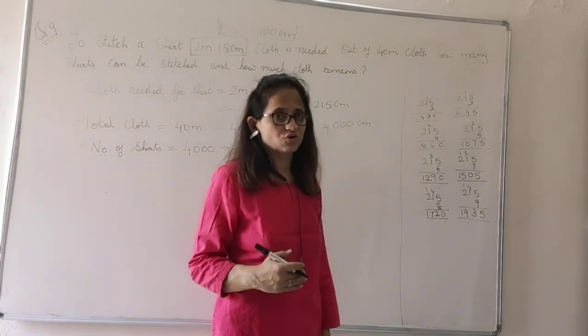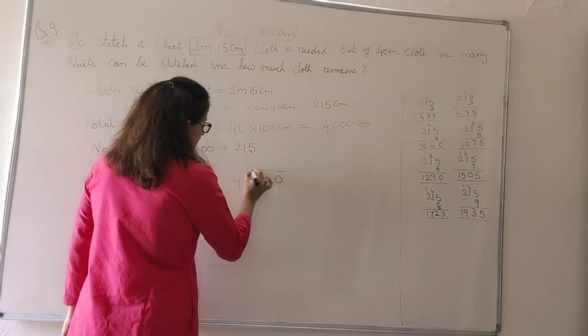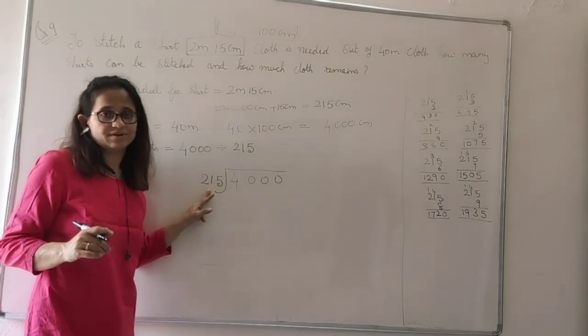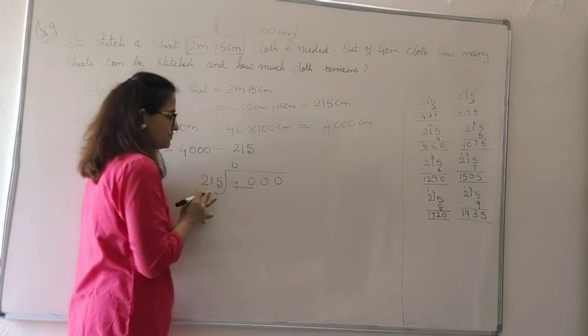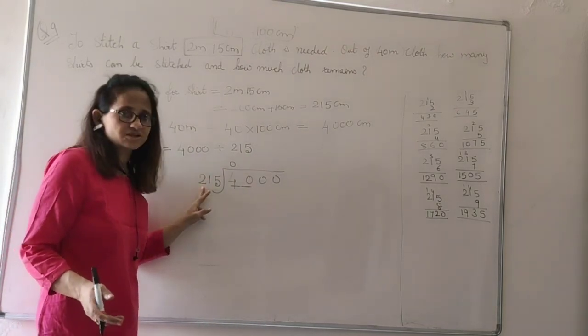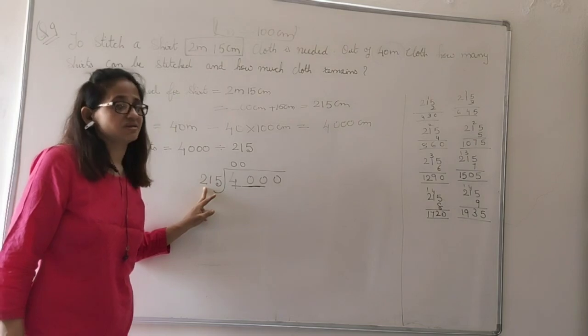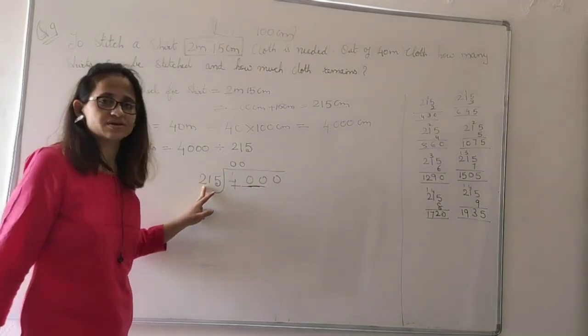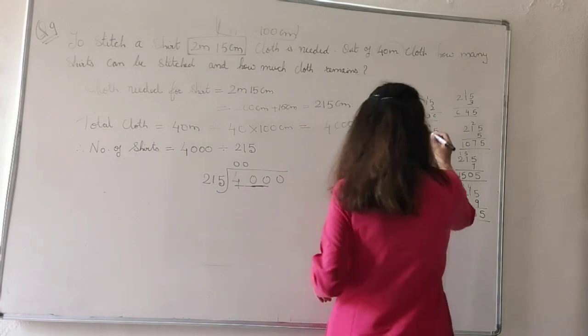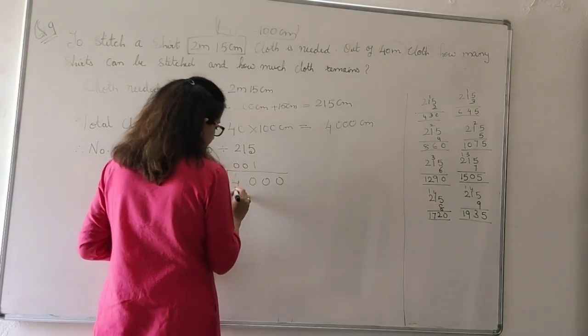Now, when I divide 4000 by 215. Now, can I divide 4 by 215? No, because 4 is small. So, I will put 0 and take 40. Can I divide 40 by 215? Again, no, because 40 is smaller than 215. So, put 0. Take 400. Now, can I divide 400 by 215? Yes. Because 400 is bigger than 215. Now, we have the table. 215 ones are 215, 215 twos are 430, which increases. So, I will write 215 ones are 215.